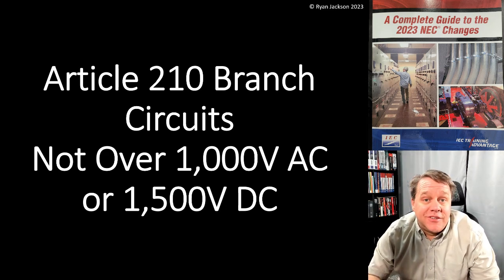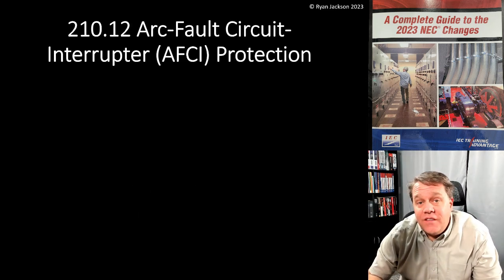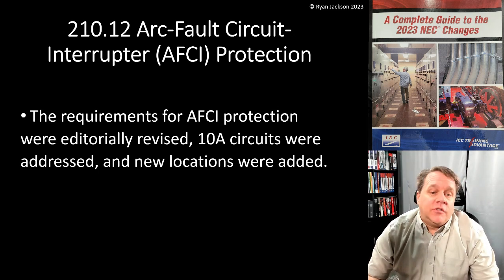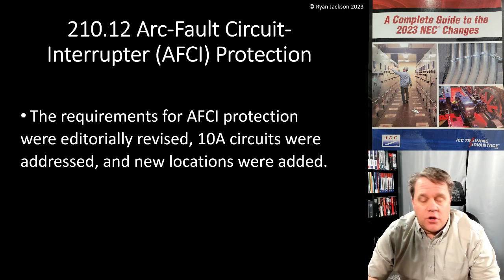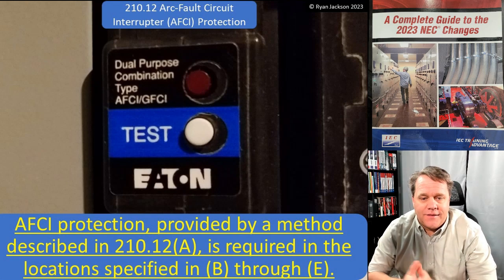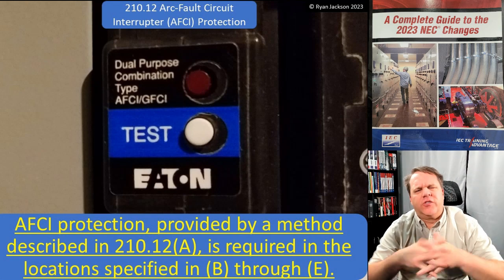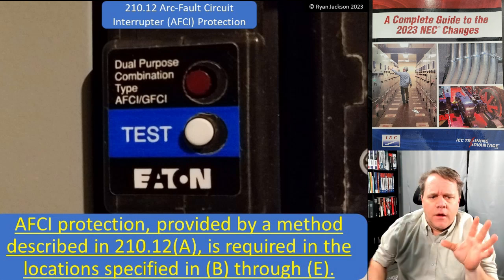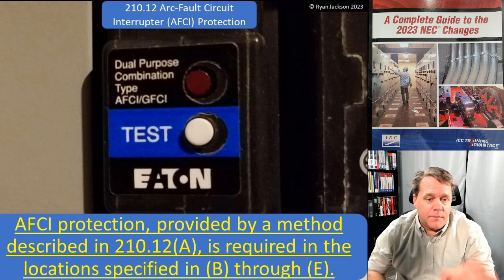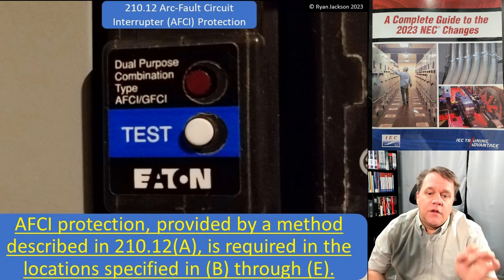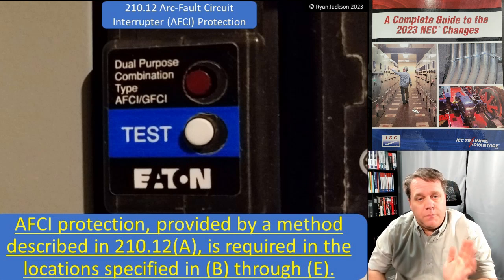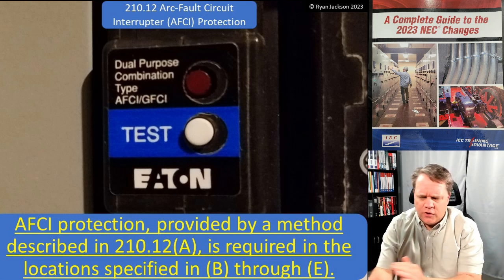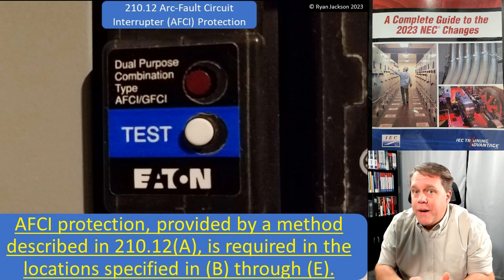Article 210, branch circuits — we're going to talk about AFCIs in 210.12. The rules for AFCI protection were editorially revised, 10-amp circuits were addressed, and new locations were added. They also reorganized this section, making it a little easier to read. AFCI protection provided by a method described in part A is required in the locations specified in parts B through E. Compared to the 2020 code, it is better — no question about that.